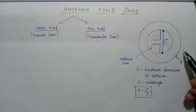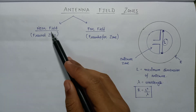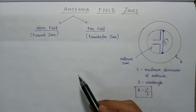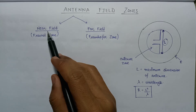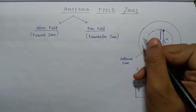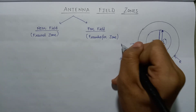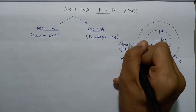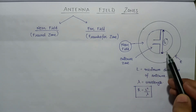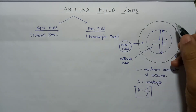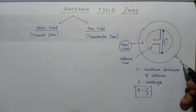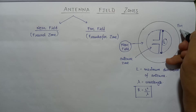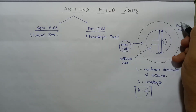After drawing this outer circle, let us classify the two fields — near field and far field. The field nearer to the antenna is termed as near field, so the region inside this boundary is the near field because it is inside the boundary or nearer to the dipole antenna. All the field outside this boundary of radius R will be the far field, because it is outside the boundary.